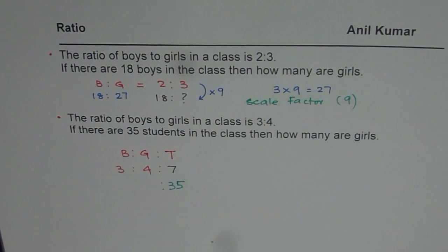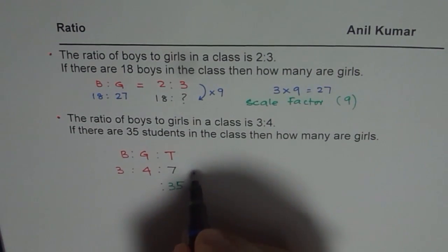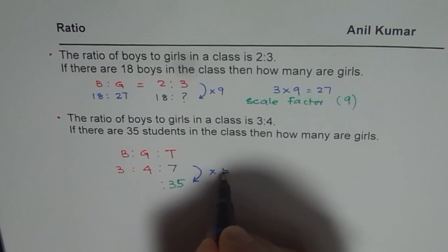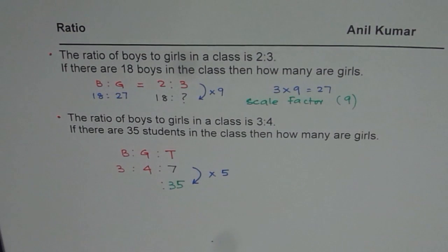Now we are given total number of students as 35, so now again we can find the scale factor. So what is the scale factor now? 7 to 35? The scale factor is 5. If you divide 35 by 7 you get 5.